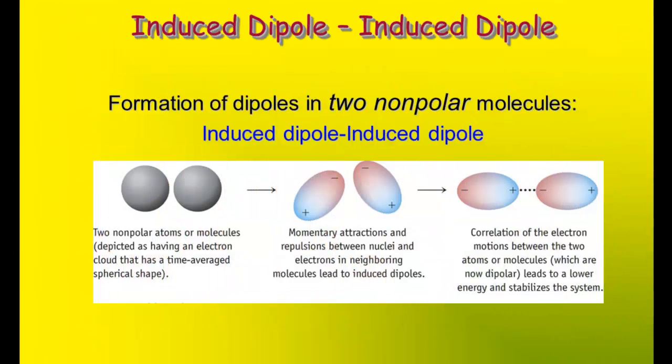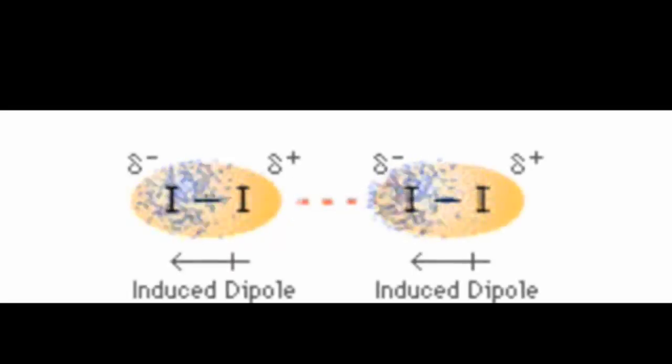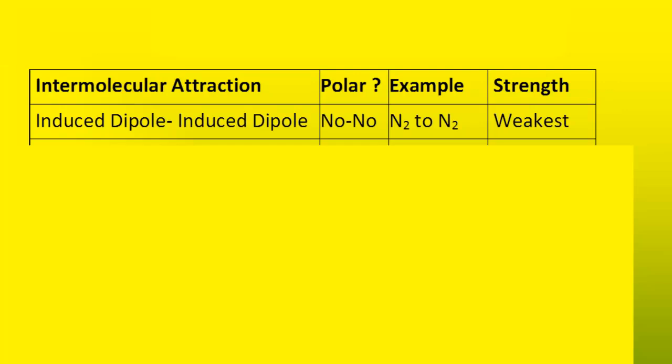The first kind of intermolecular attraction I'll explain is induced dipole–induced dipole. This occurs among non-polar molecules. One molecule will induce a dipole on another molecule, and in the molecule that is doing the inducing, a dipole is in fact created in that molecule. To summarize: molecules do not need to be polar for this interaction. An example of two non-polar molecules would be two nitrogen molecules. Of the intermolecular attractions presented, induced dipole–induced dipole is the weakest.